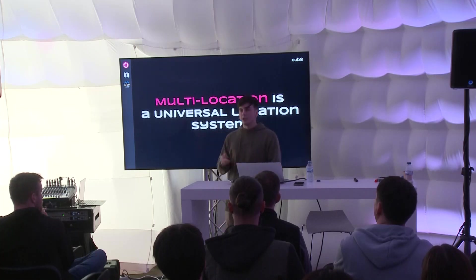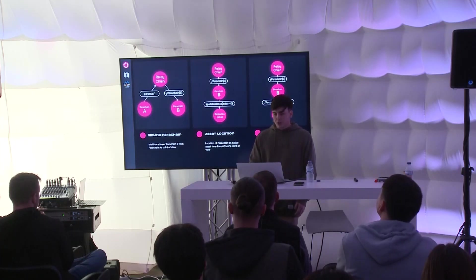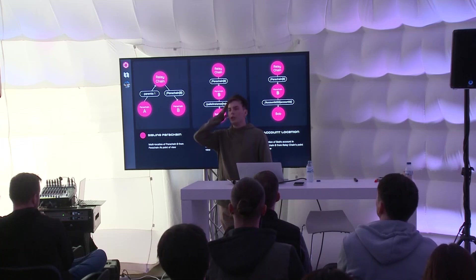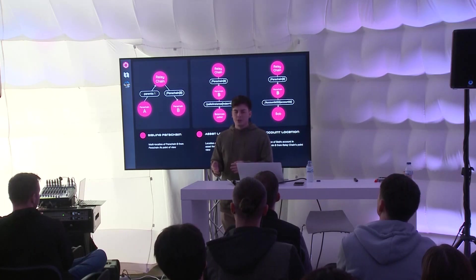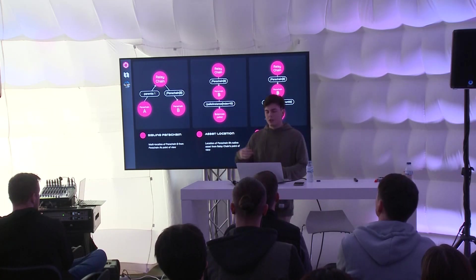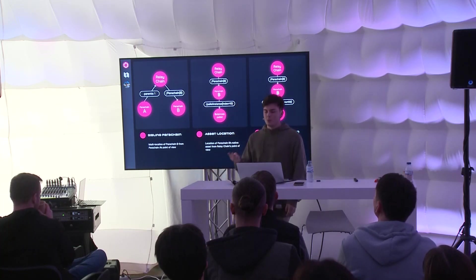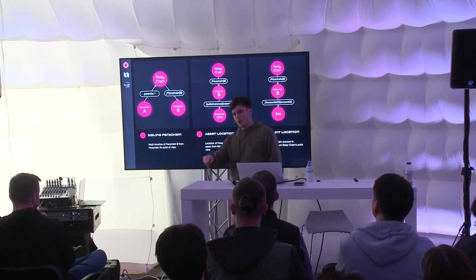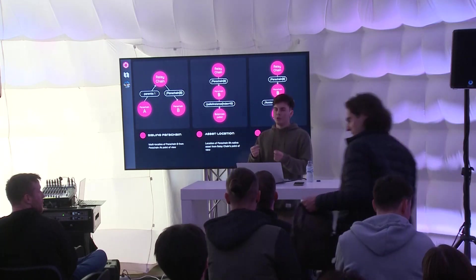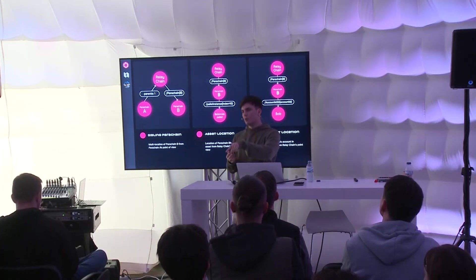Now let's talk about the most complex component of the XCM format: multi-location. Since XCM is a universal message format, multi-location is a universal location system. It allows different consensus systems with different environments and logic to identify locations in the same way. The beauty of multi-location is that it can identify everything — accounts, parachains, and tokens — all with the same format. The main idea is to look at everything as a tree, where an account is a leaf node.